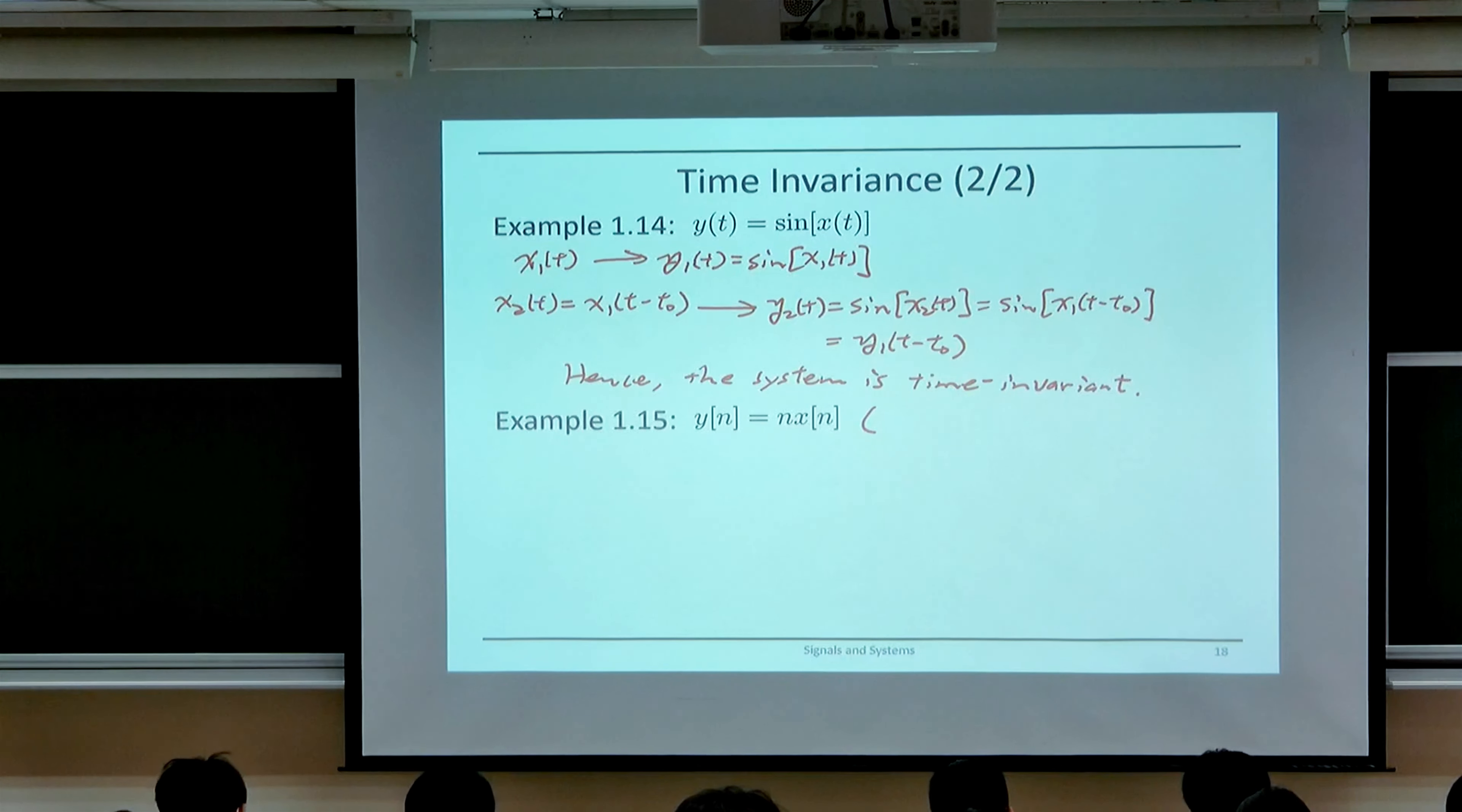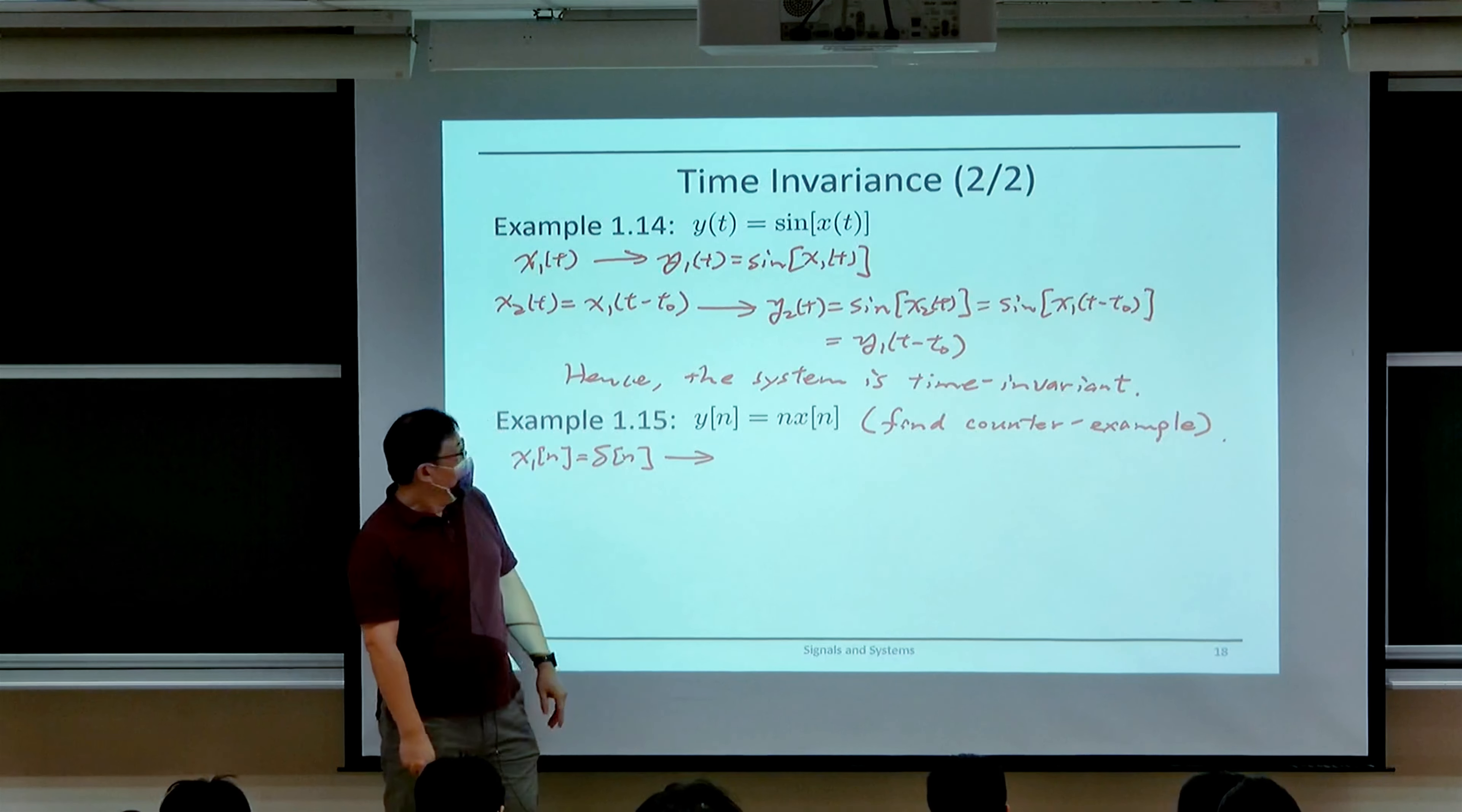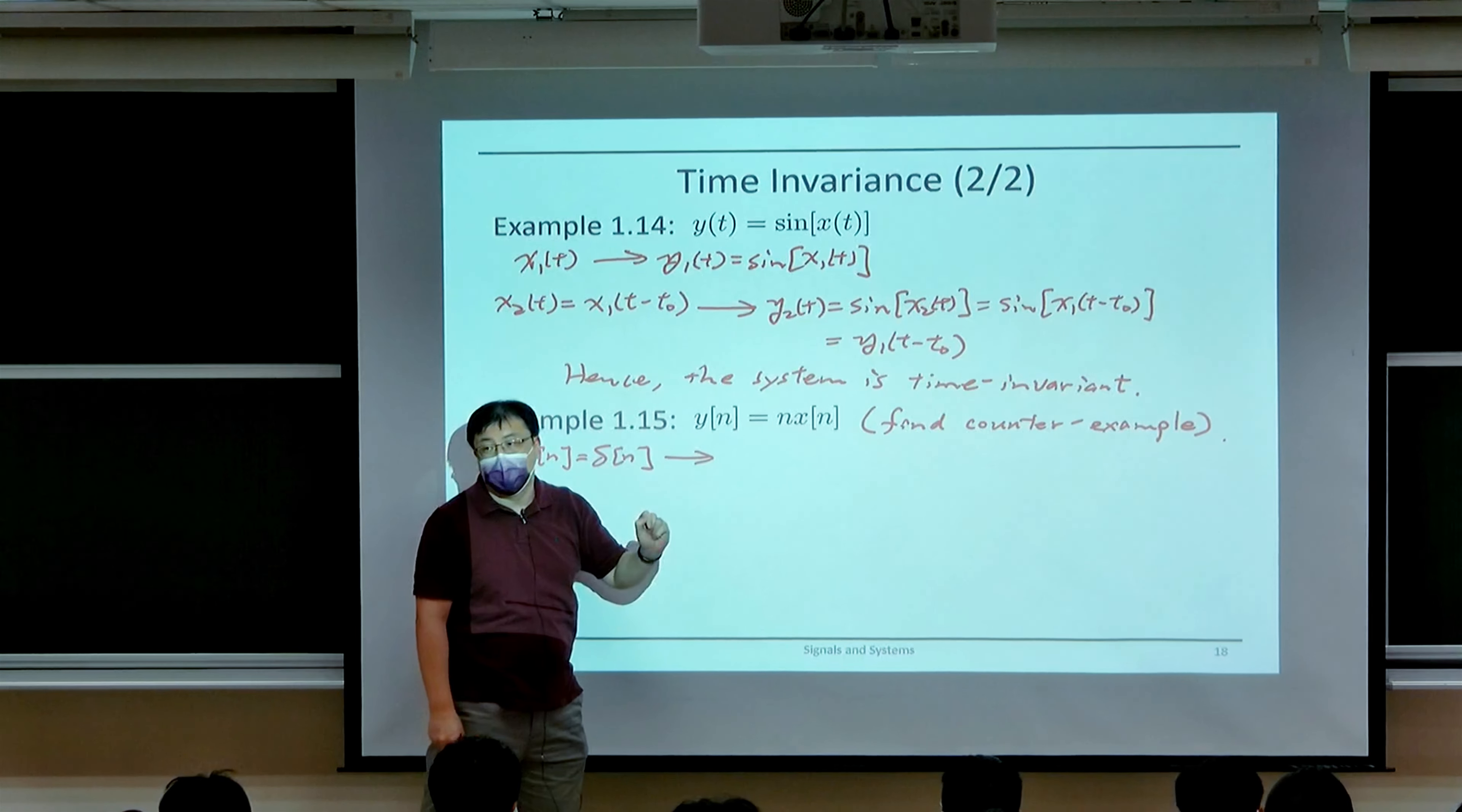To show that the system is not time invariant, we just have to find a counterexample. The counterexample we're going to use here is to choose x₁[n] as a unit impulse. This unit impulse has a 1 at time 0 and 0 everywhere else. If you insert this into the system, this x[n] is non-zero only when n is equal to 0. But when n is equal to 0, you're multiplying by 0, so the output is still 0.